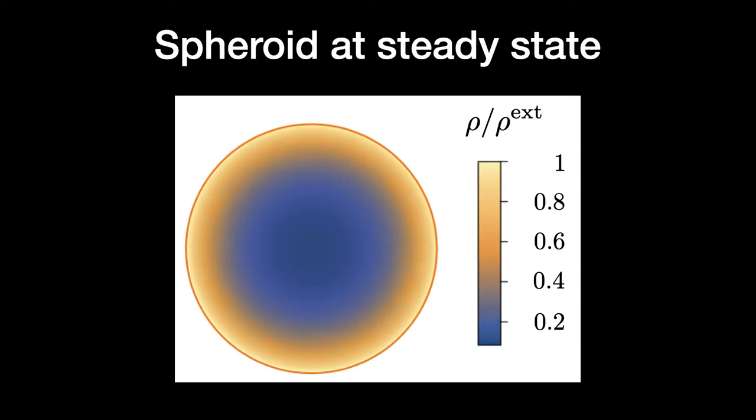When such cellular aggregates are grown in a culture medium, they tend to reach a steady state size, limited by the finite diffusion of metabolites. Here is depicted a characteristic concentration profile of metabolites within the aggregate, diffusing from the outer culture medium. Yellow depicts the highest concentrations and blue the lowest.